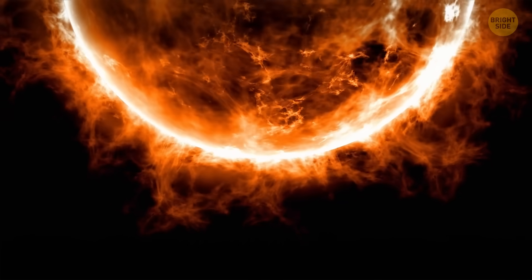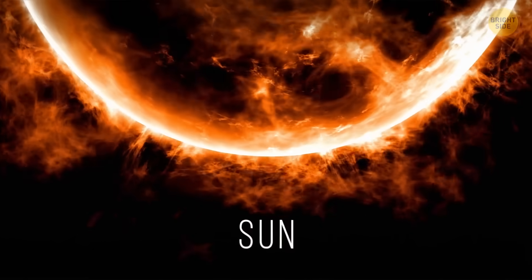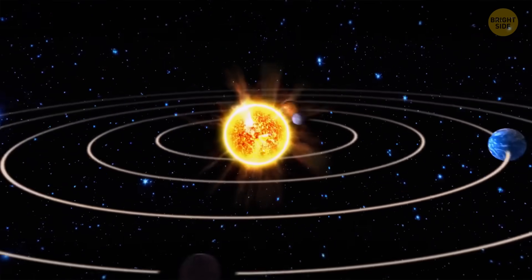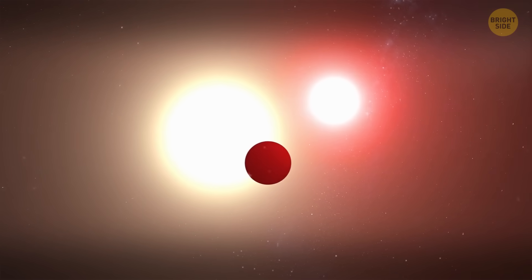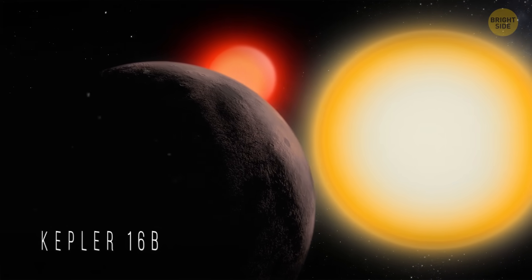There's only one star in our solar system, the Sun, and all the planets orbit this star. But there are also systems where a planet orbits two suns. For example, Kepler-16b.